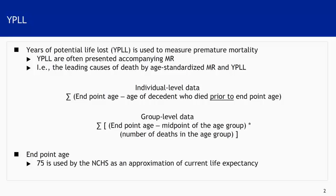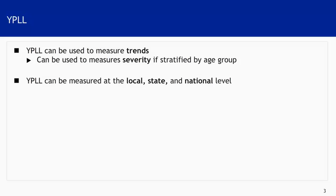YPLL measures premature mortality and is heavily influenced by deaths at younger ages. Oftentimes you will see YPLL estimates presented alongside mortality rates — for example, paired with leading causes of death estimated using age-adjusted mortality rates. YPLLs can be measured using individual-level data about people who have died, or using deaths aggregated by age group. The basic concept is that YPLLs are a summation of the years between death and an endpoint age that usually approximates life expectancy — the age of 75 is often used by the U.S. National Center for Health Statistics.